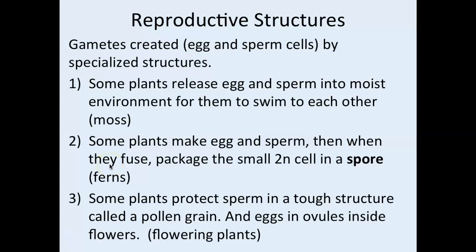Next, reproductive structures are different on land because land is dry, hot, and egg and sperm are not kept moist in water. Plants have to develop ways to get egg and sperm to each other in a non-moist environment. Some plants, like mosses, still release egg and sperm out into the world — mosses are found in very moist environments where they're wet and rainy, so the egg and sperm can still swim to each other.